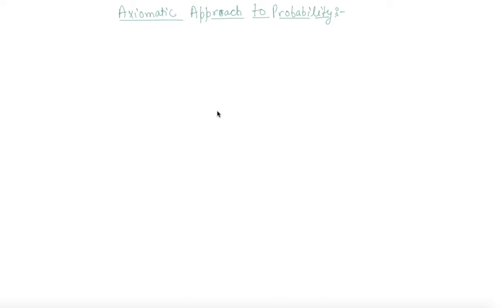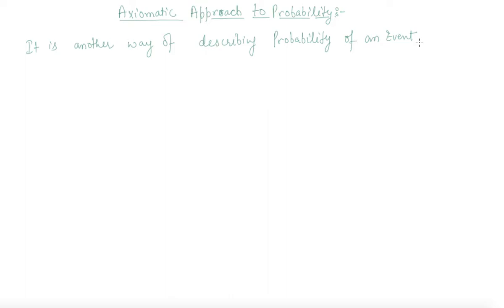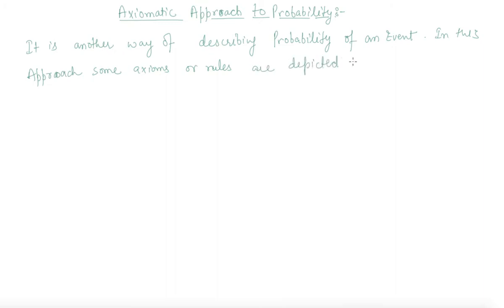So what is the axiomatic approach? It is another way of describing the probability of an event. In this approach, some axioms or rules are depicted to assign probabilities.